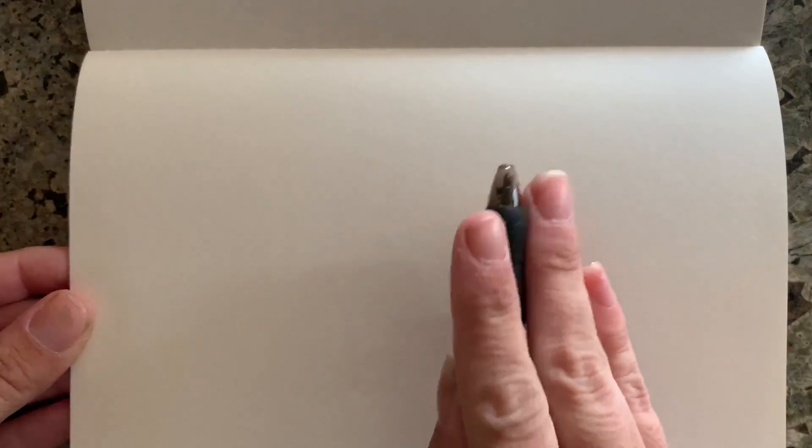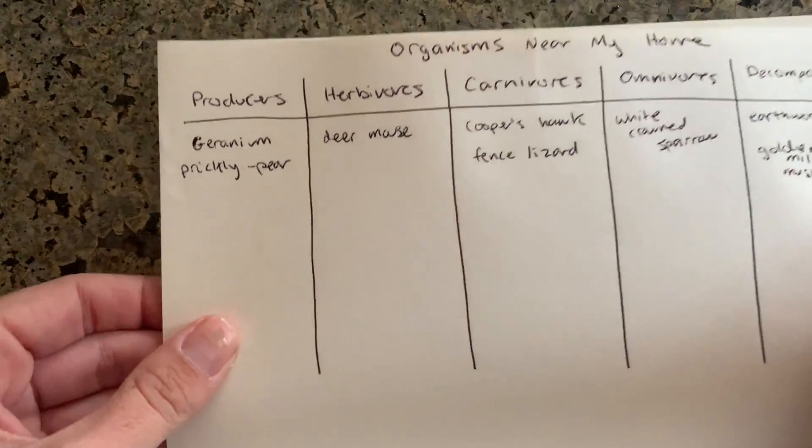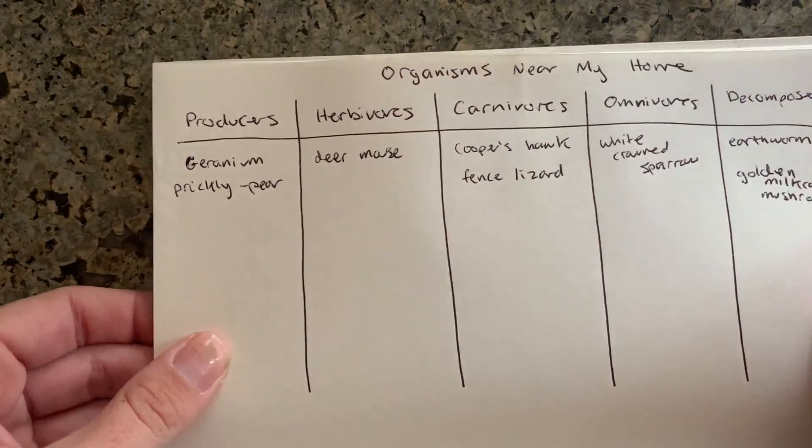All right, let's begin constructing a food web. Open up a brand new blank page in your science journal and have something to write with. Make sure you also have your list of producers, herbivores, carnivores, omnivores, and decomposers ready to go. Start by opening up your blank page — you can do two side by side if you want a little more room.